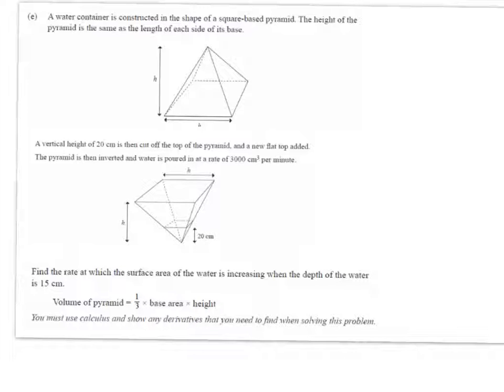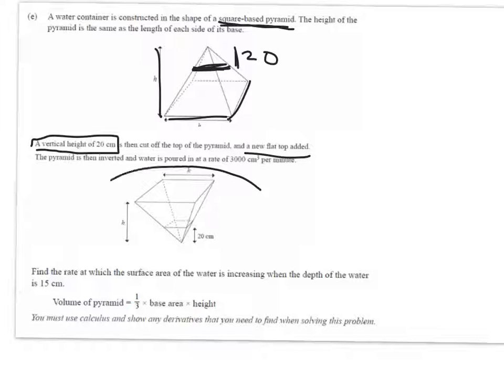We've got a water container built in the shape of a square based pyramid. That's going to make life a bit easier because this dimension, this dimension and this dimension are all the same. The height of the pyramid is the same as the length of each side of its base. A vertical height of 20 centimeters has been cut off the top of the pyramid and a new flat top added. They've chopped a bit off and turned it upside down.